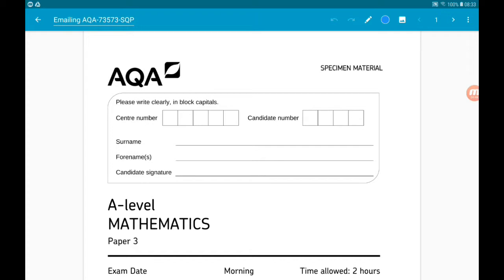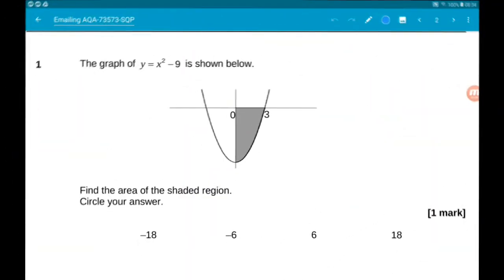Okay, let's go with question one. The graph of y equals x squared minus 9 is shown below. We want to find the shaded area.